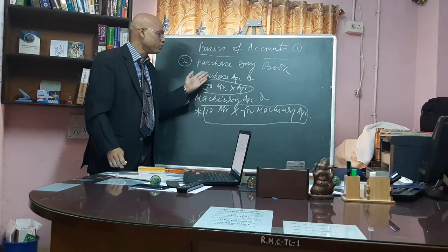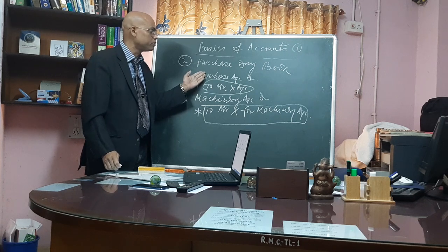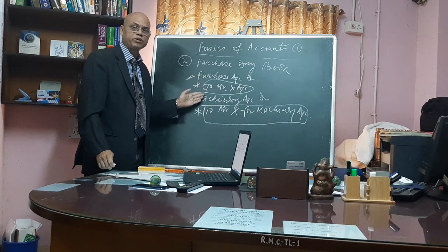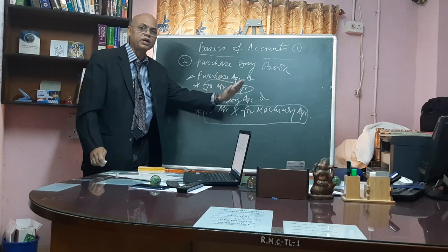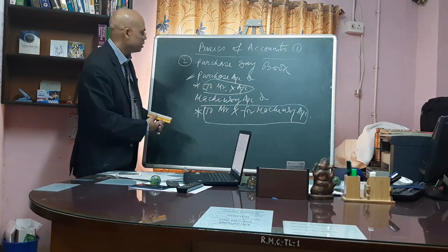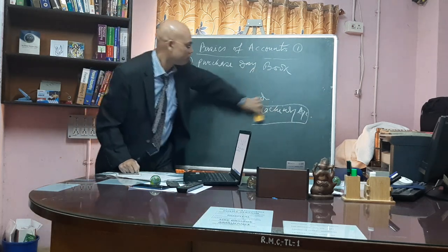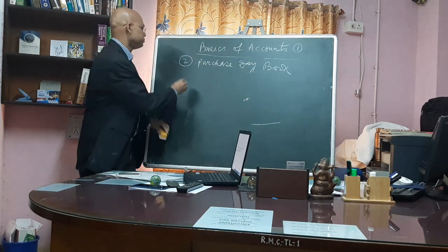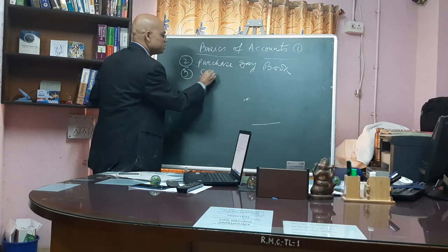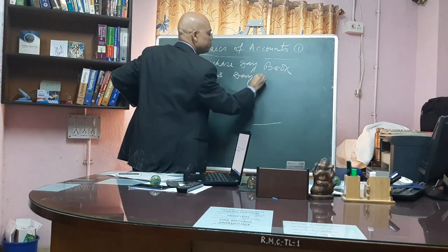Only goods purchased on credit will come under purchase day book. If assets are purchased on credit, that will go under journal proper. Next — number three, sales day book.